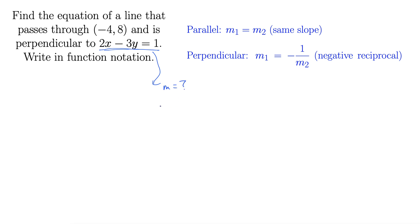We do that by getting it into slope intercept form y equals mx plus b. If we can get it into that form then we'll clearly have the slope. So let's just solve for y. We have 2x minus 3y equals 1.